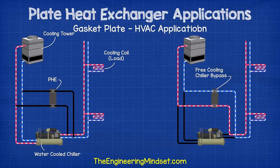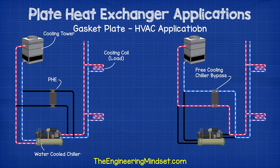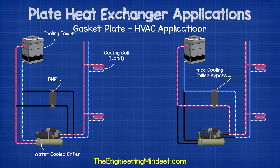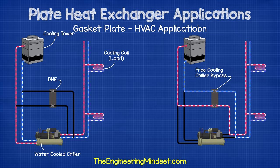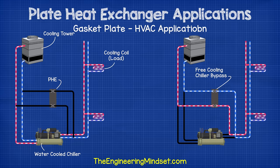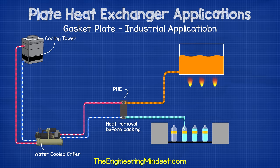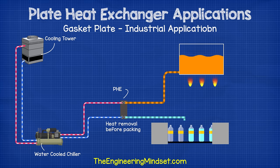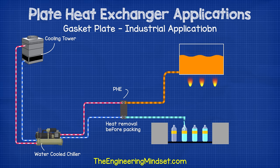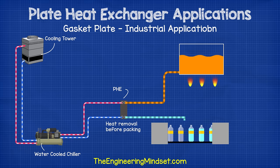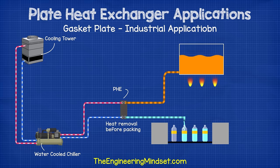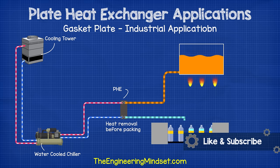In HVAC, you'll find gasket plate heat exchangers used to indirectly connect chillers, boilers, and cooling towers to central plant systems. They're also used for economizer circuits and heat recovery circuits to reduce the cooling load on chillers. In industry and manufacturing, many plants use plate heat exchangers for pasteurization and waste heat recovery. For example, a manufacturing plant may use chilled water to cool a newly manufactured beverage product — the hot liquid passes through a plate heat exchanger connected to a chiller's cooling circuit, extracting heat without the two fluids mixing.